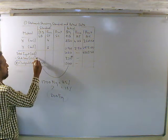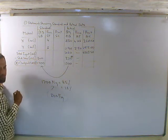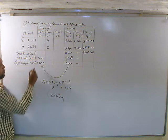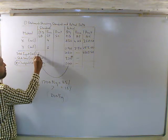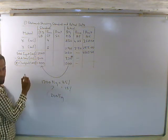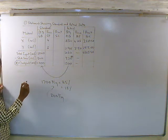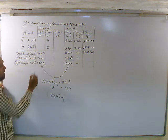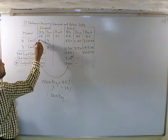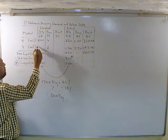So total standard input is 2,000 kg. Material X is 40% of 2,000, which equals 800 kg. Material Y is 60% of 2,000, which equals 1,200 kg.